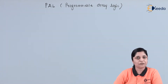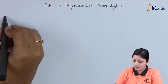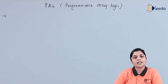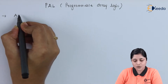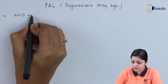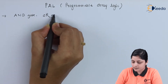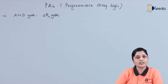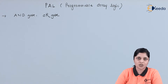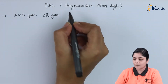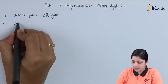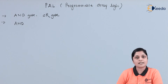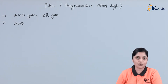PAL is a special case of PLA. In PAL, it also has M inputs and N number of outputs. The basic logic gates used in PAL are AND gate and OR gate. We generally use these two types of basic logic gates to implement the PAL. In PAL, the AND gate is programmable and the OR gate is fixed.